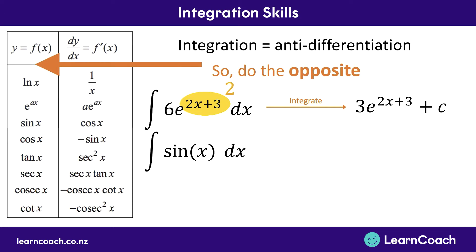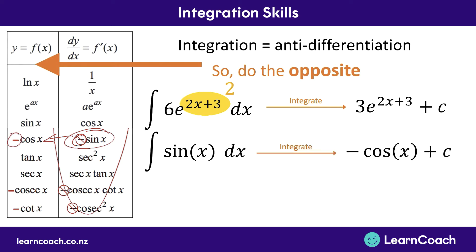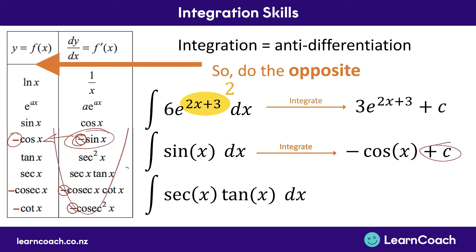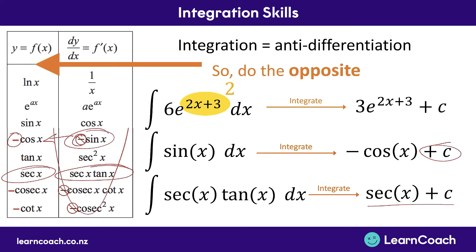For another example, we could look at integrating sine x. You'll see sine here on the table will integrate back to cos x. One thing to notice is the negative sign at the front — if you ever come across a negative sign on the integration side (the right-hand column), you can ignore it and put the negative on the left-hand side. So sine integrates to negative cos x, plus c. Or for a final example, sec x tan x dx: we can see on the right-hand side that sec x tan x integrates across to sec x, so we write sec x plus c.